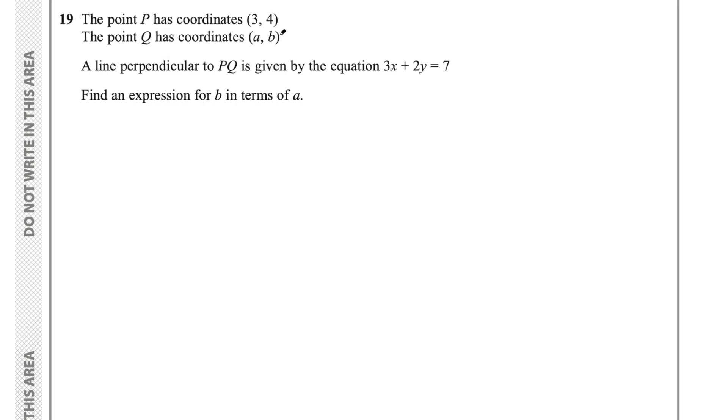This question says point P has coordinates 3, 4, point Q has coordinates A, B. A line perpendicular to PQ is given by the equation 3x plus 2y equals 7. Find an expression for B in terms of A.